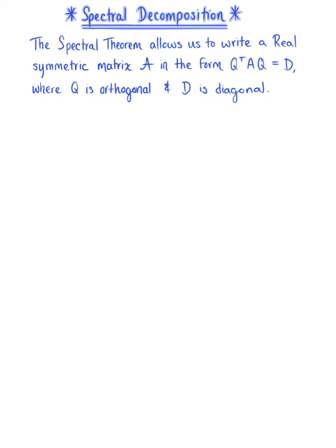Here we are looking at the spectral decomposition of matrix A. The spectral theorem allows us to write a real symmetric matrix A in the form of the transpose of matrix Q times matrix A times matrix Q equals matrix D.